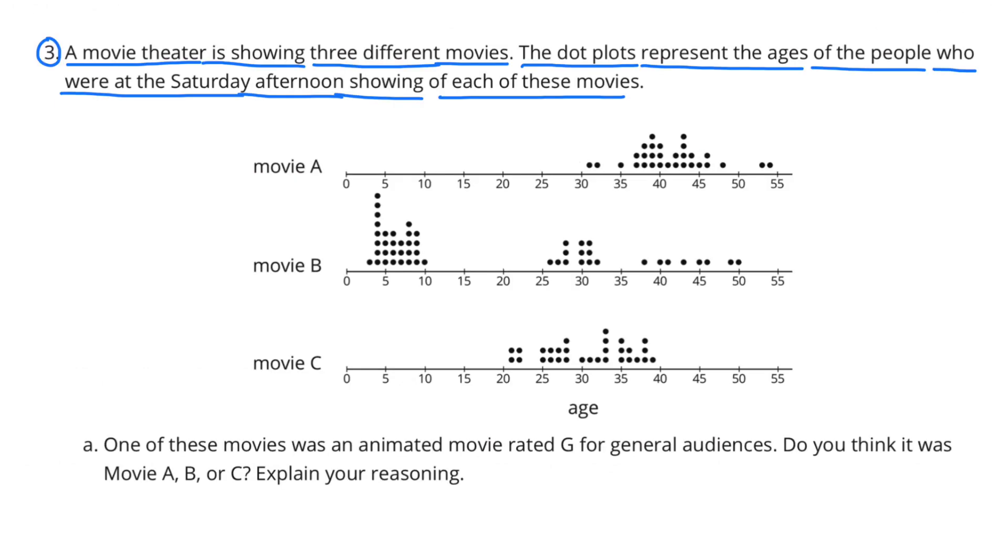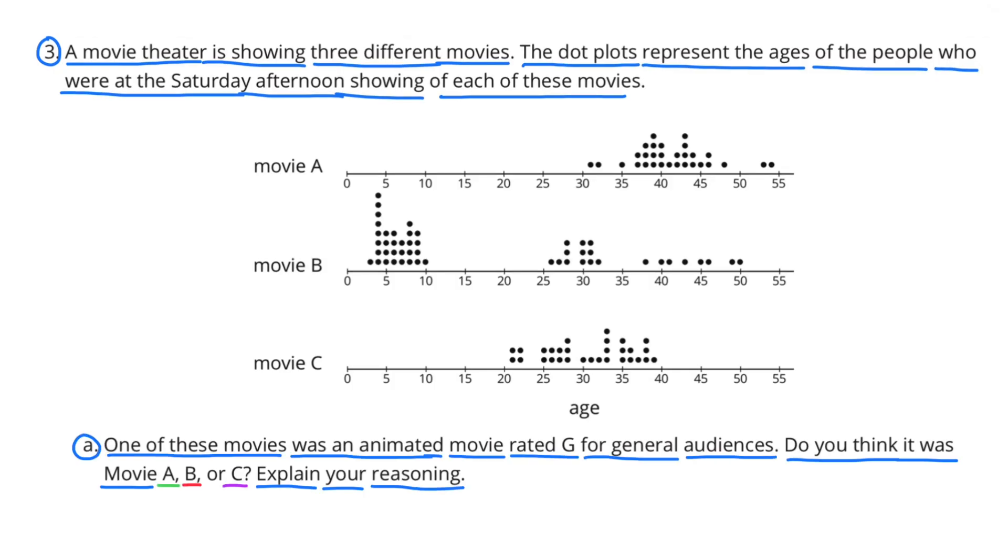Number 3. A movie theater is showing 3 different movies. The dot plots represent the ages of the people who were at the Saturday afternoon showing of each of these movies. A. One of these movies was an animated movie rated G for general audiences. Do you think it was movie A, B, or C? Explain your reasoning.